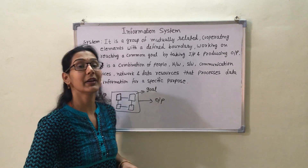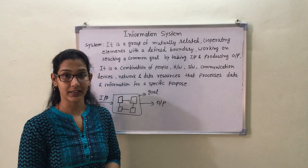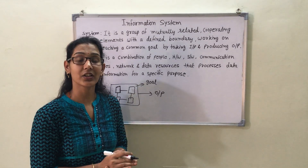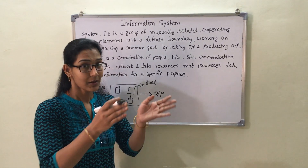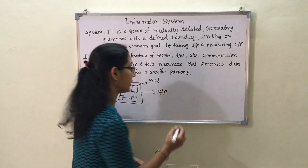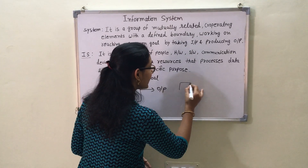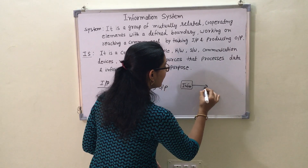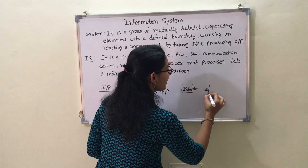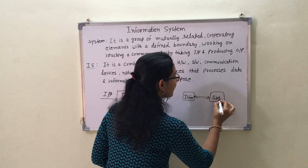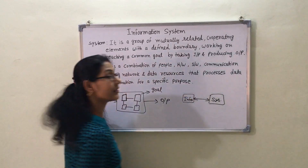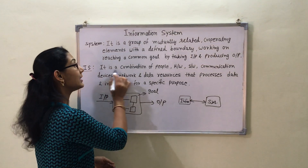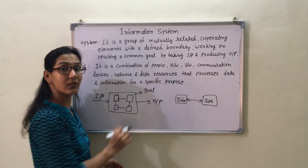When we combine information and system with the latest technologies, it becomes an information system. We can say that it is an interaction between processes and technologies, or a relationship between information and system.